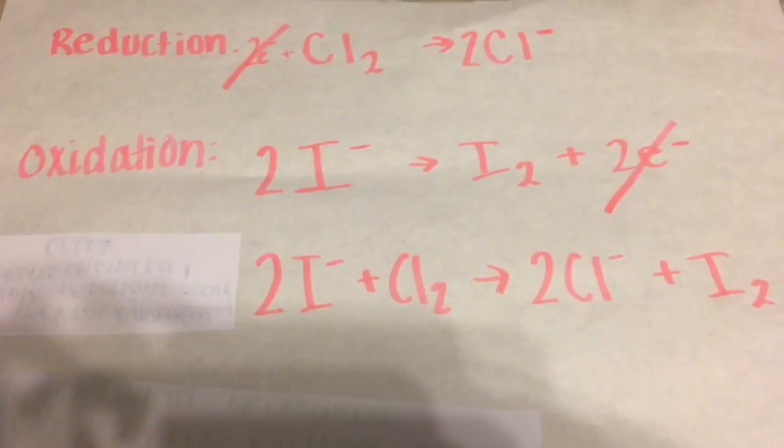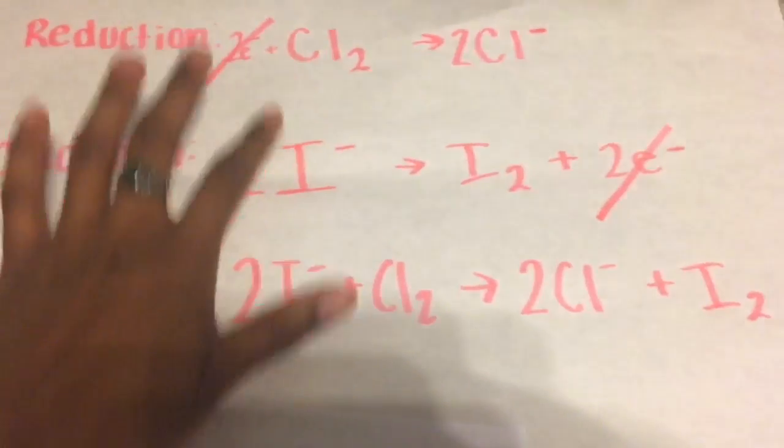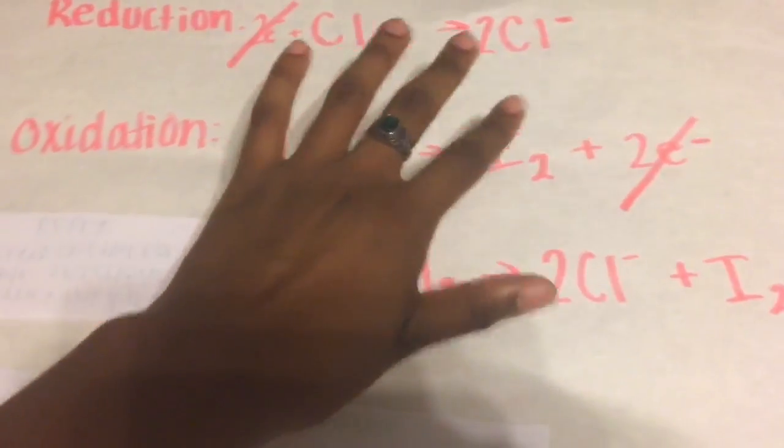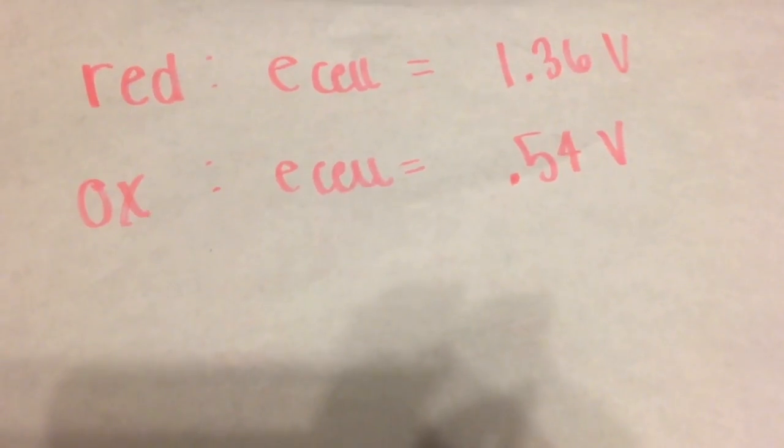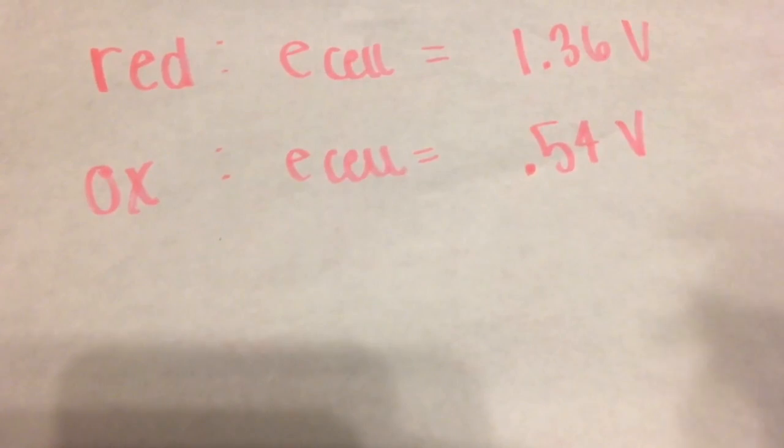Alright, so we basically just added them together. As you can see, these two carry down to this side and these two remain on this side over here. So to find the voltage of the given reactions, we look at the reduction potentials.